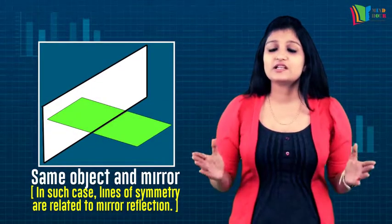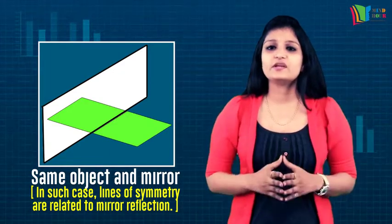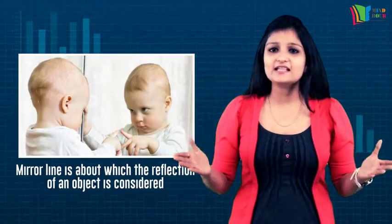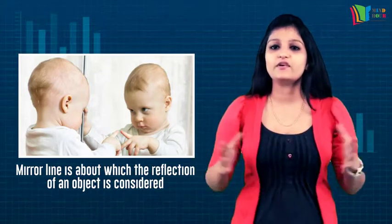The line of symmetry is related to mirror reflection. An object and its mirror image are equal in shape and size. An object and its image are always at the same distance from the surface of a mirror, which is called the mirror line.